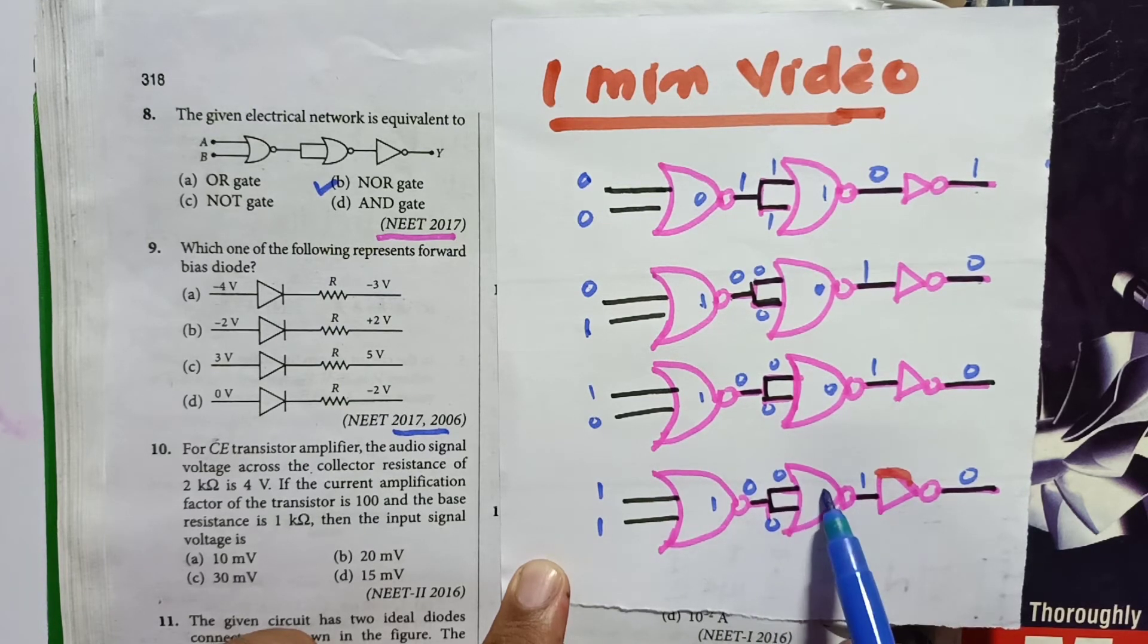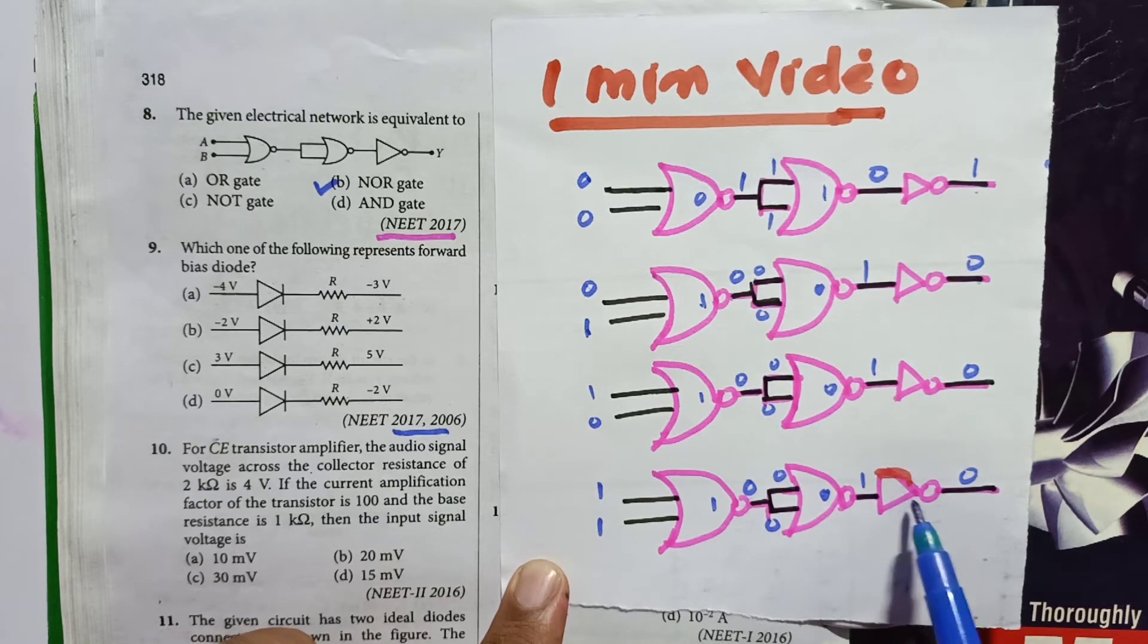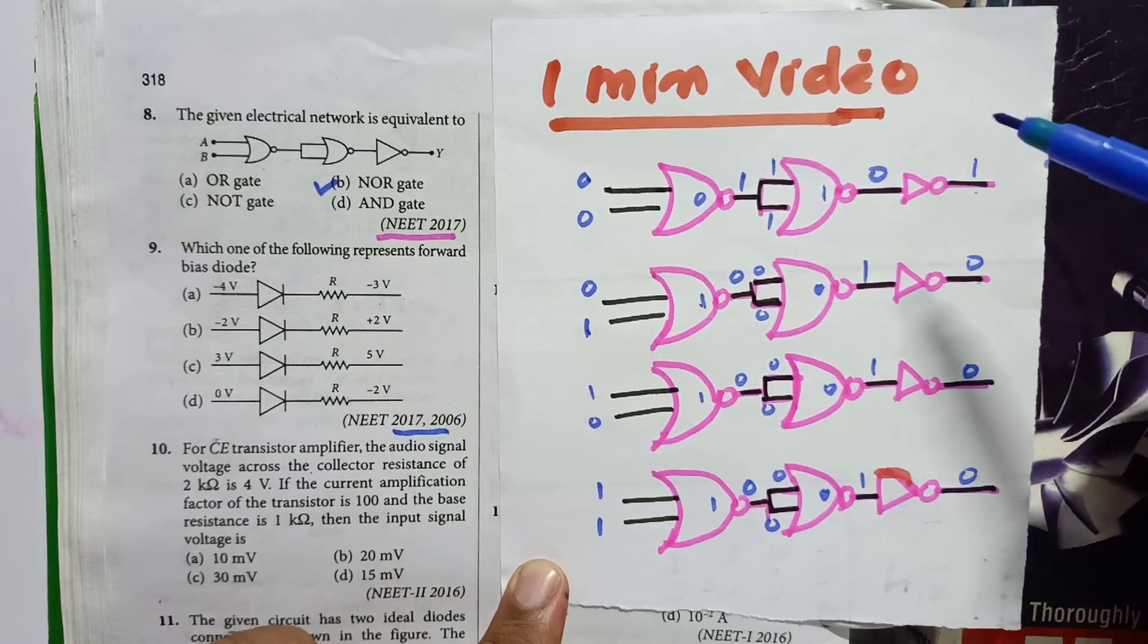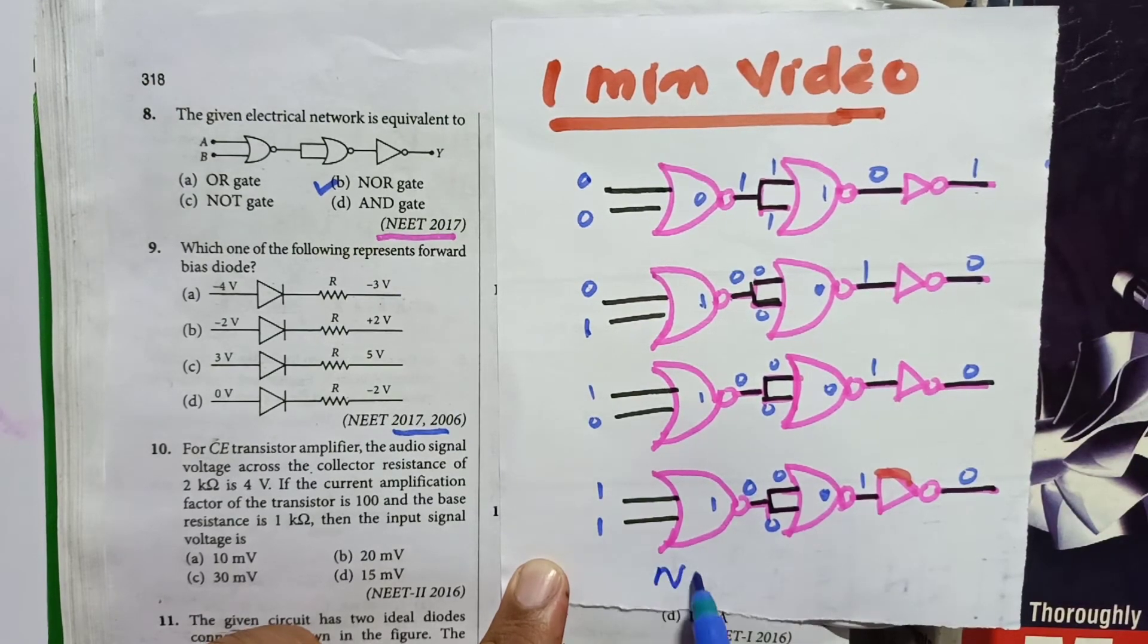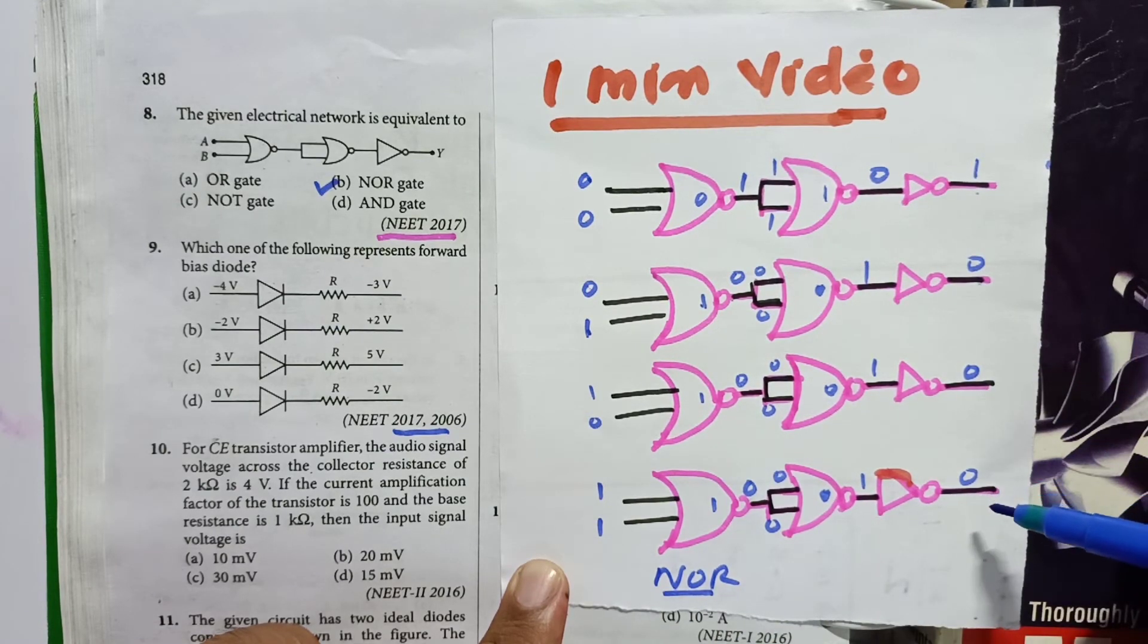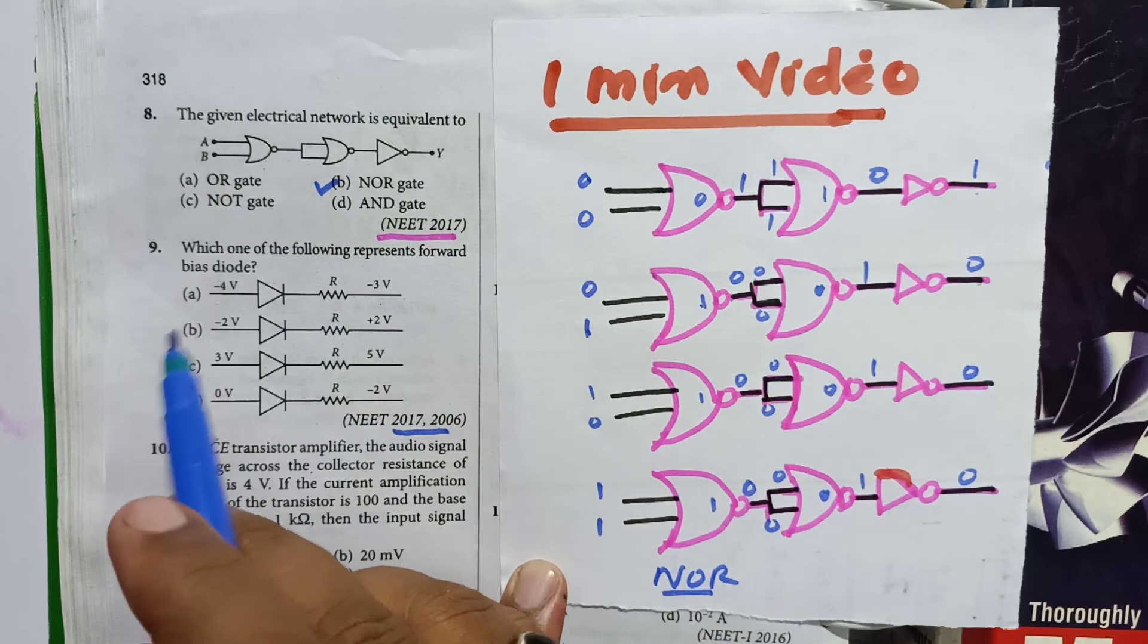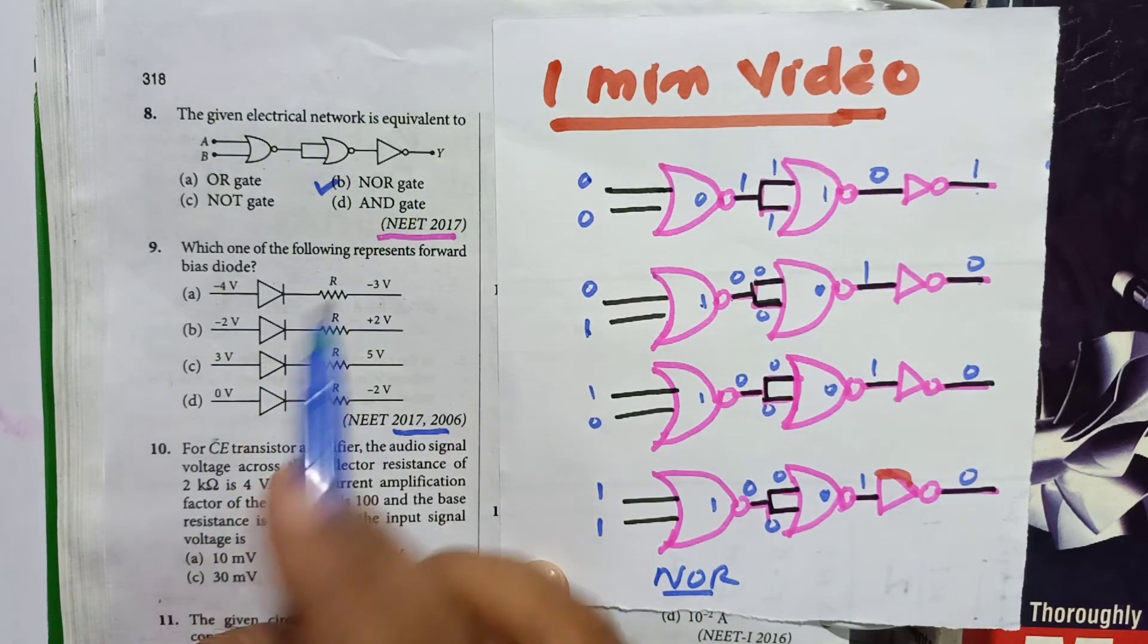So the output is 1, 0, 0, 0. This is an output of NOR gate. You just remember 1, 0, 0, 0 is the output of a NOR gate. So this is going to be the correct option, that is NOR. NOR gate is the correct option, that is B option.